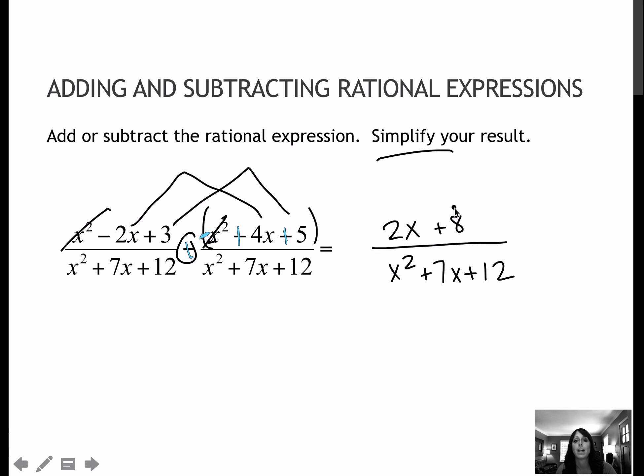And then, of course, I always want to simplify. So if I look at my numerator, it looks like I can take out a 2. So I have 2 times the quantity of x plus 4. My denominator, if I look for numbers that multiply to 12 that add to 7, that would be 3 and 4. So x plus 3, x plus 4.